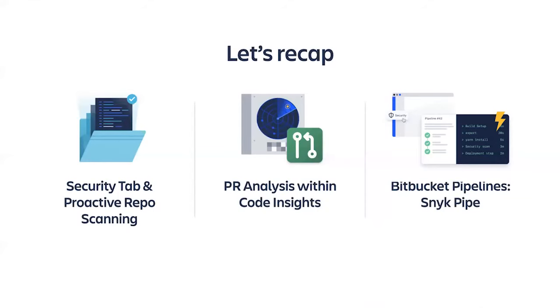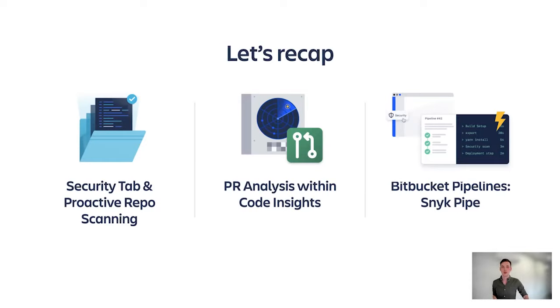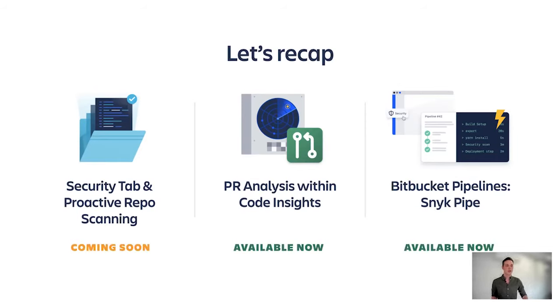So we've covered a lot today — let's recap. Looking at Snyk with Bitbucket Cloud, there are three key things you can do. Number one, you can identify vulnerabilities in your repo before the security team comes knocking. Number two, you can find and fix vulnerabilities you're introducing with each PR. And number three, you can scan builds and identify redundancies using Bitbucket Pipelines. We're happy to note that we're slowly rolling out the security tab and the new Snyk Connect app in the coming weeks, so it won't be long until you can get your hands on it. In the meantime, the PR analysis tool and Snyk pipes are available for use. Thank you so much for your time today — we hope you're excited about jumping into the full suite of Snyk features within Bitbucket Cloud.